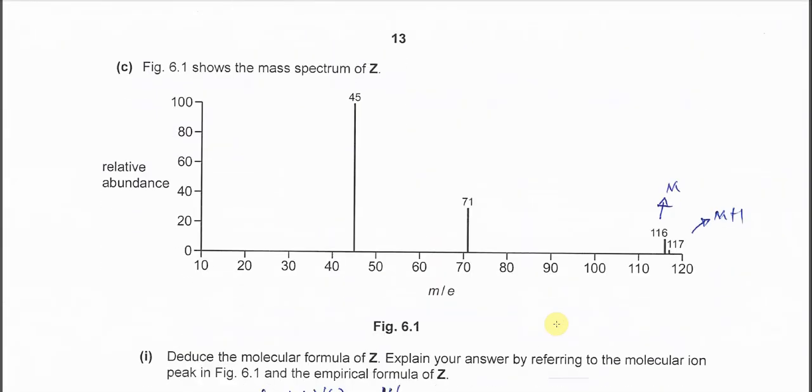For figure 6.1, there's very important info. It's given 116 and 117. From here we know that 116 is the molecular ion M, 117 is M plus 1. Plus 1 means one extra mass unit.